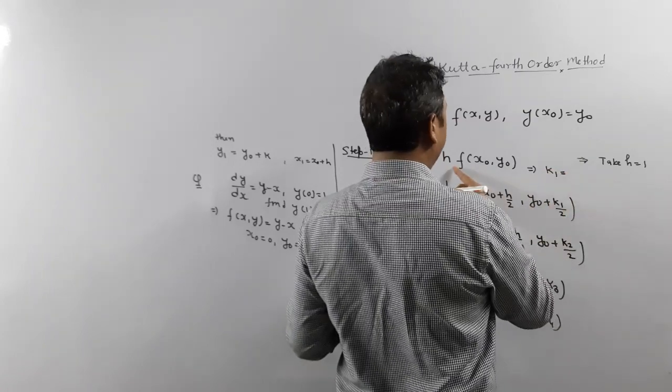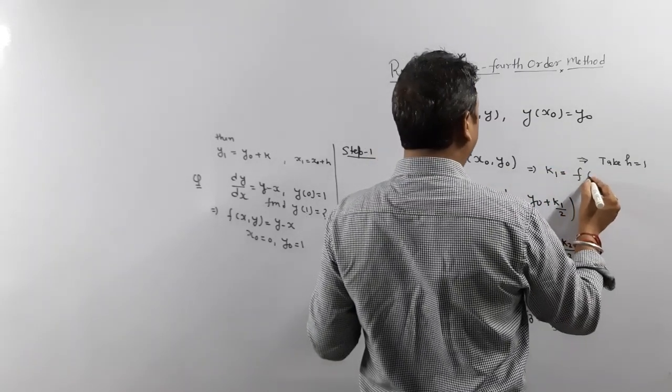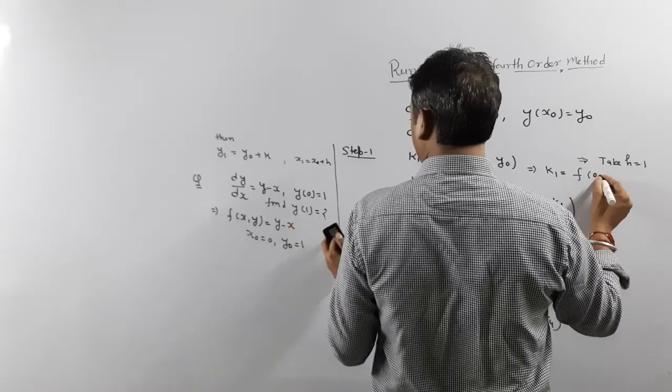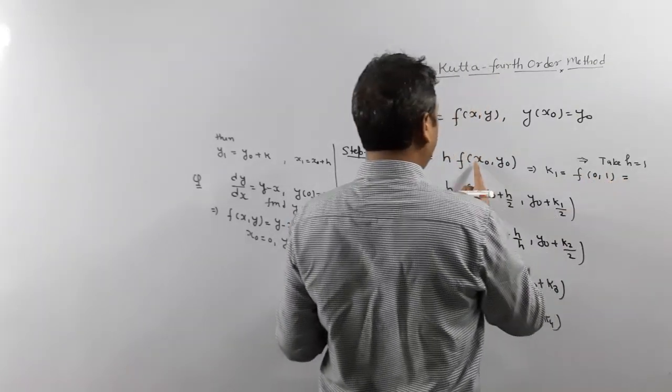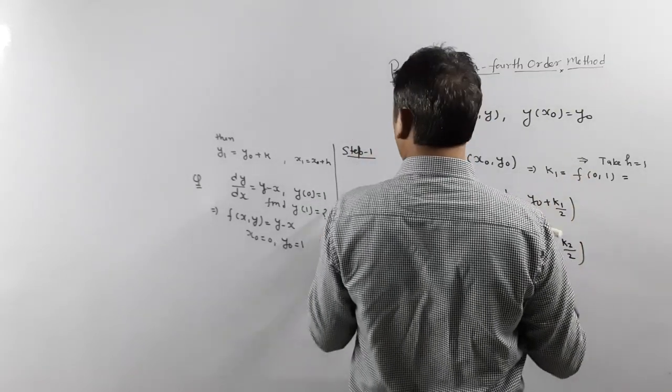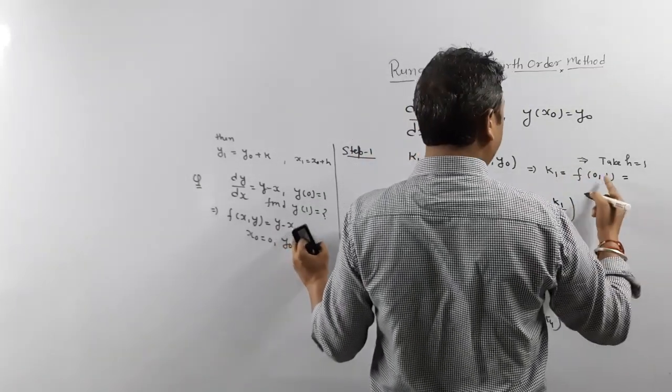Function at x0. What is x0? 0. What is y0? 1. What is f(x,y)? y minus x. 1 minus 0 equals 1.